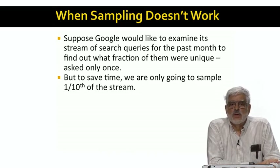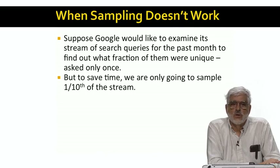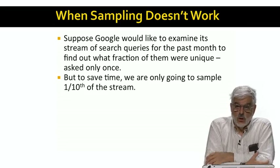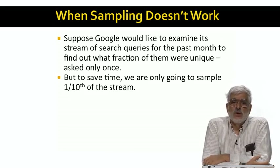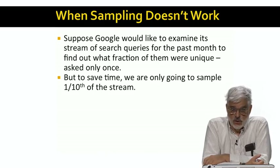Many questions about the stream can be answered by sampling the stream. Suppose, to be concrete, that we randomly select one-tenth of the queries to be examined. For example, if we wanted to know what fraction of the search queries were single-word queries, we could compute that fraction for the sample and be pretty sure it was very close to the fraction for the stream as a whole. A one-tenth sample would be a billion queries or more over a month. Statistically, if those queries are selected at random, the deviation from the true answer will be minuscule.